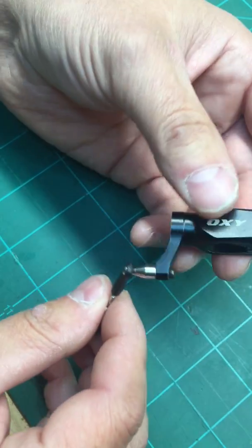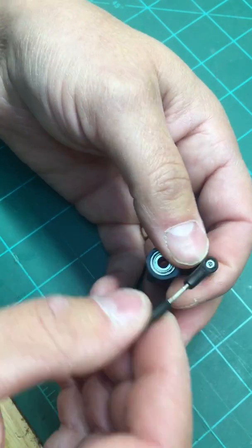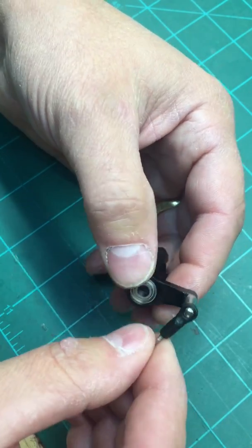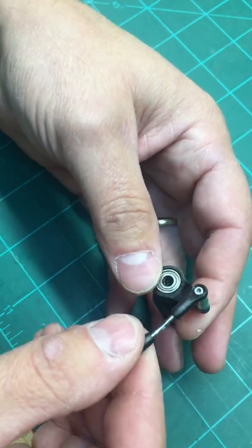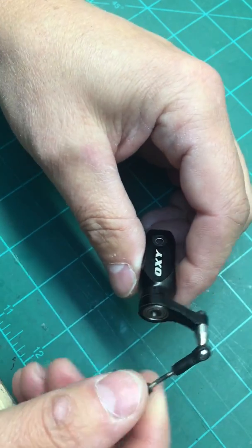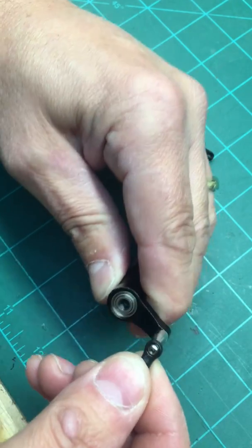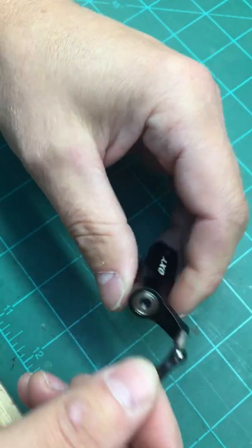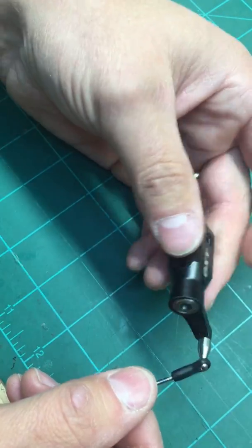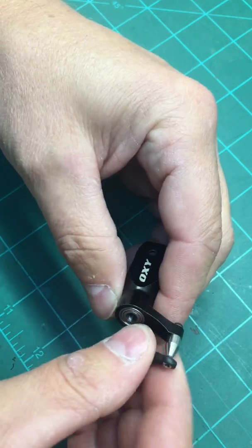So on your bigger helicopters it's critical though, because if it's loose, obviously with the amount of force that you have on like a 700 size helicopter, if that link was to be loose obviously it could pop off and that would be catastrophic.